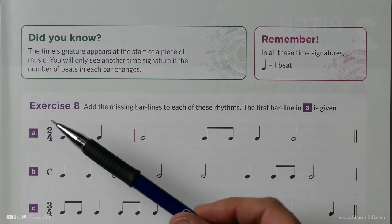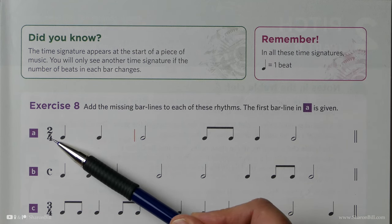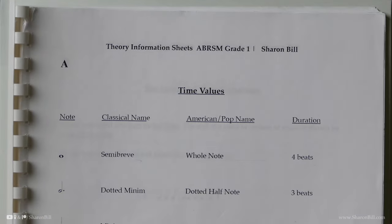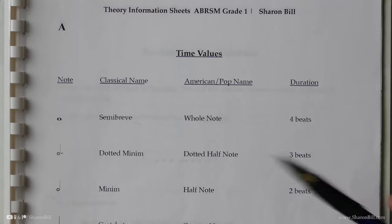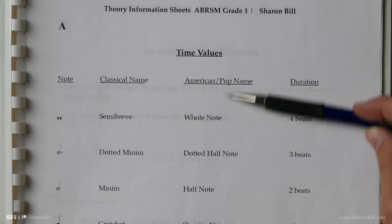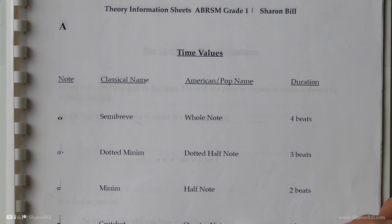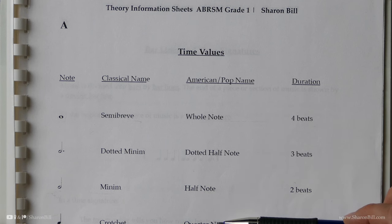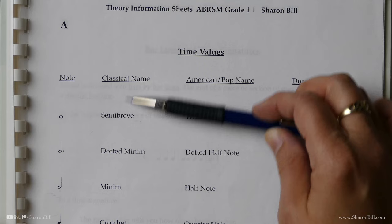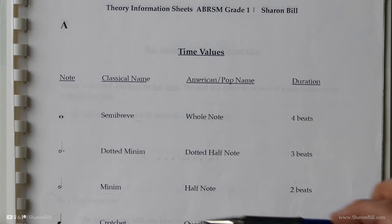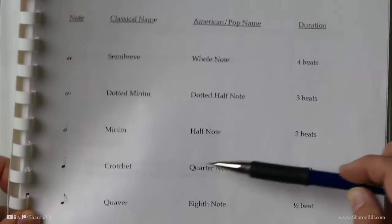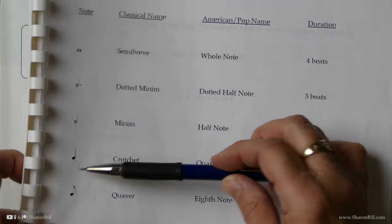All of the time signatures we're dealing with in this grade are counting in crotchet beats per bar. Referring back to my PDF on my website, you can see the American or pop names — it depends what instrument you play. If you play electric guitar or drums, they tend to use the American terms, whereas we use the classical names for piano and so on. They both mean the same thing. We've divided into quarters — there are four quarters to the whole — so we're always counting in units of a crotchet for this grade.